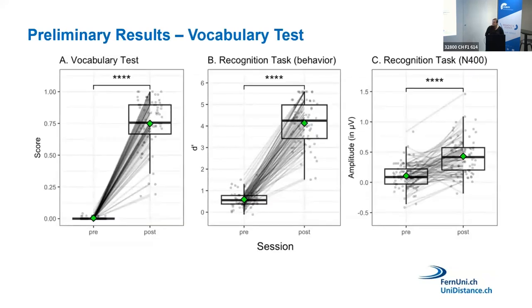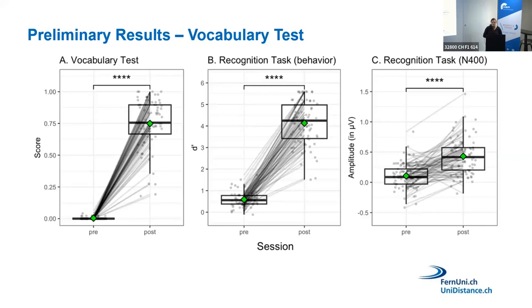The results are quite straightforward. Looking at vocabulary test performance before and after learning, we see an increase. Similarly for the behavioral recognition task and the N400 effect using the predefined time window and channels — there is an overall effect of time indicative of learning. However, when we split by main effect of individual learning strategy or by combinations of strategies, we do not see any difference.